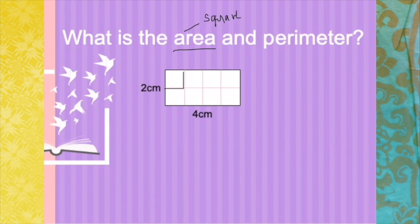So we have to count 1, 2, 3, 4, 5, 6, 7, 8. Therefore, your area would be 8 centimeters square.